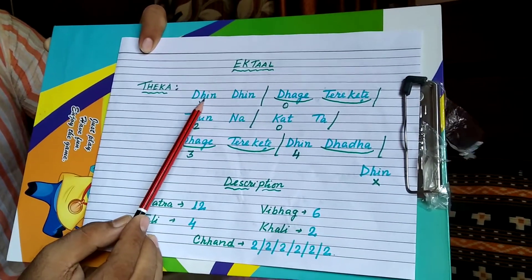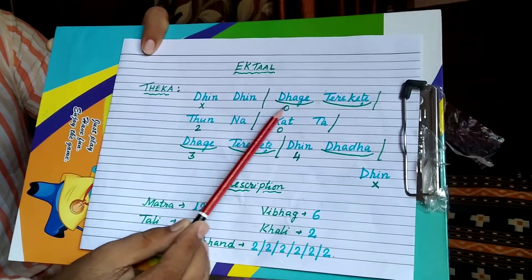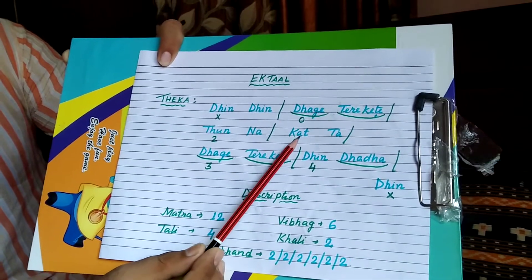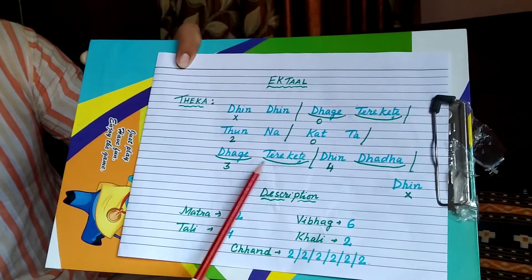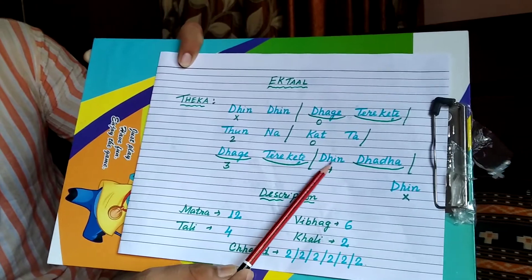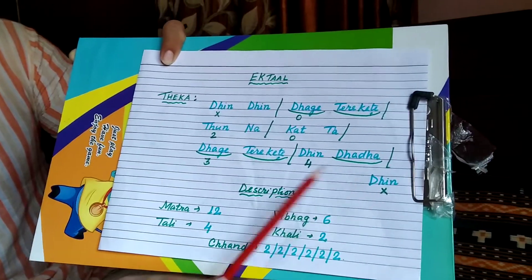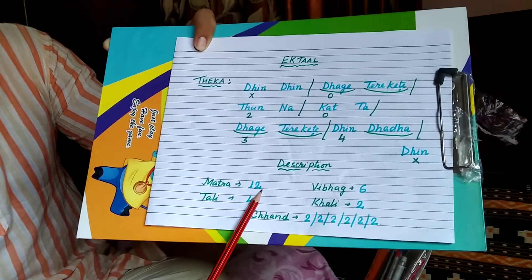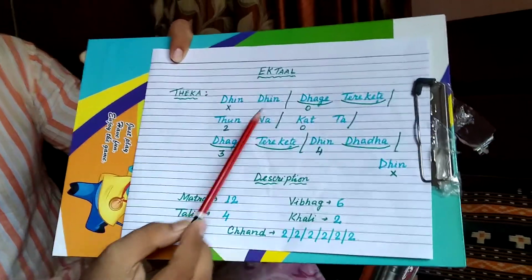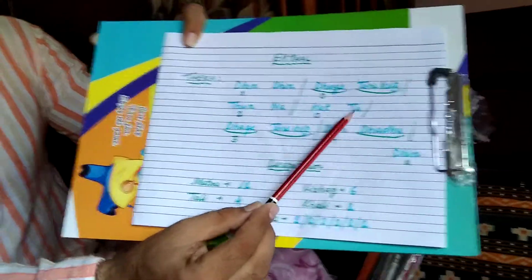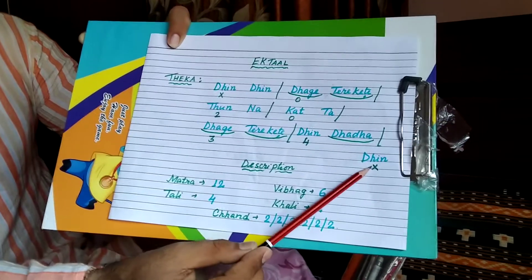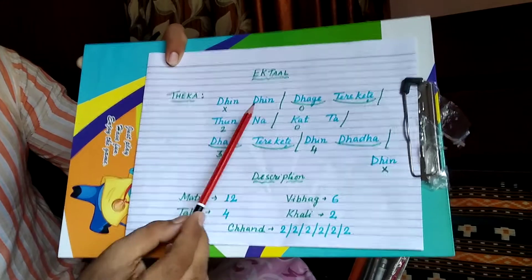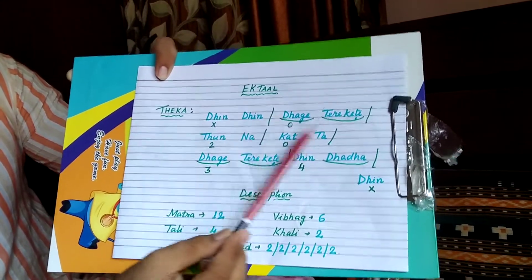Now the description of this Tal. Matra: 12. You count 1, 2, 3, 4, 5, 6, 7, 8, 9, 10, 11, 12, then come back to 1. Vibhag: 6 — you can see 6 divisions: 1, 2, 3, 4, 5, and 6.